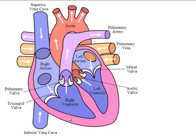When the heart expands, the deoxygenated blood from all the different parts of the body comes to the right atrium through the inferior vena cava and superior vena cava. Then this deoxygenated blood is passed to the right ventricle through the tricuspid valve. When the heart expands, the tricuspid valve opens up and simultaneously the pulmonary valve closes.